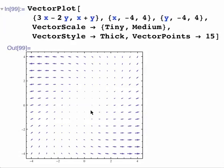To illustrate the difference between a vector field and a direction field, let's look at an example of a vector field. F of x, y is equal to 3x minus 2y and x plus y.